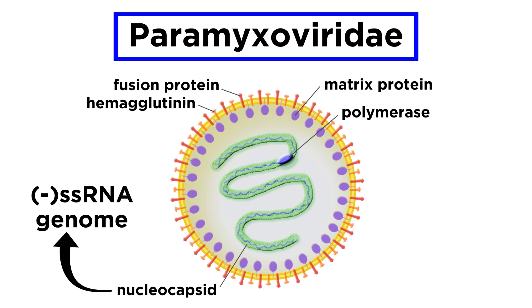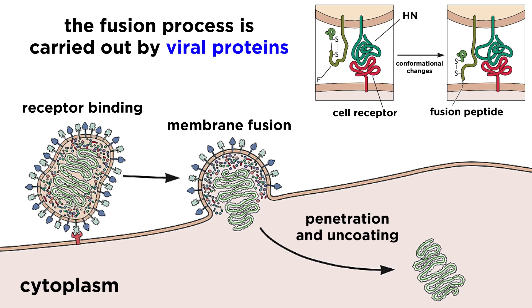Within that pleomorphic envelope surrounding paramyxoviruses, there are two glycoproteins that facilitate viral replication within a host. One of these glycoproteins is a viral attachment protein that helps the virus attach to the host cell to begin with. The other is a fusion protein that supports the process of the host cell membrane and viral membrane fusing together, which allows the virus to enter the host cell. The process of fusion involves a series of intricately controlled steps carried out by viral proteins, the blueprints for which are packaged neatly into the viral structure.